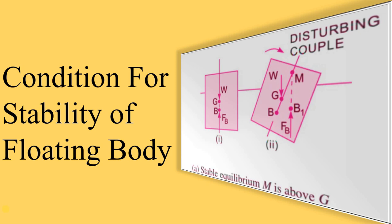In this video, I explain the condition for stability of a floating body. A floating body means a certain part of the body is inside the fluid — inside the water — and some part is outside the water. This is shown in diagrams 1 and 2, where the water level is indicated.